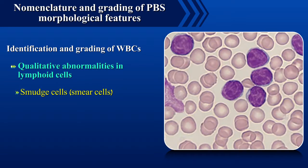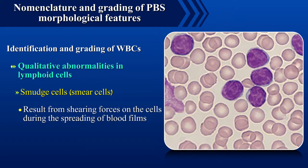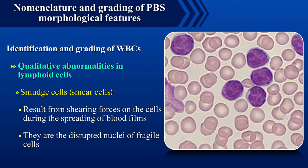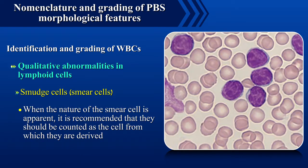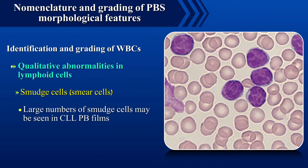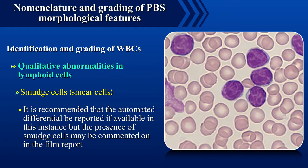Smudge cells or smear cells result from shearing forces on cells during the spreading of blood films; they are the disrupted nuclei of fragile cells. When the nature of the smear cell is apparent, it is recommended they be counted as the cell from which they are derived. Large numbers of smudge cells may be seen in CLL peripheral blood films; in this instance it is recommended that the automated differential be reported if available, and the presence of smudge cells may be commented on in the film report.